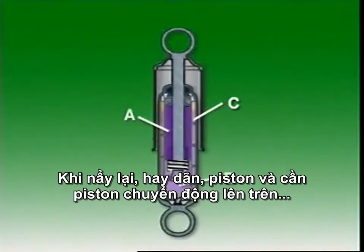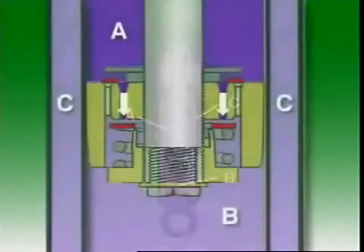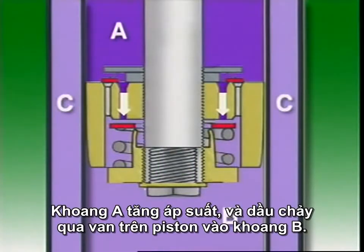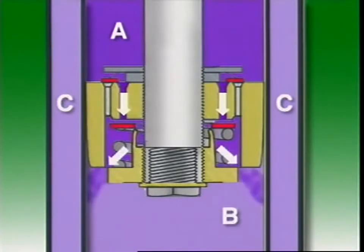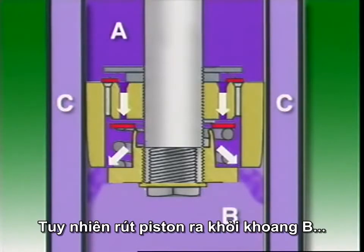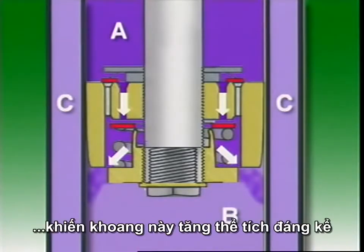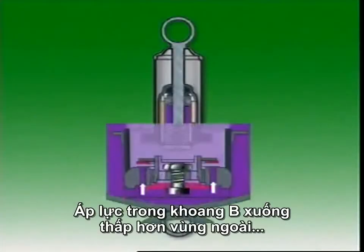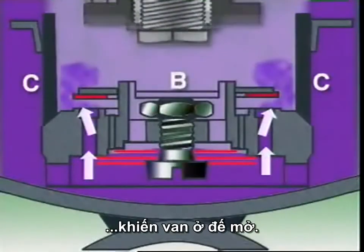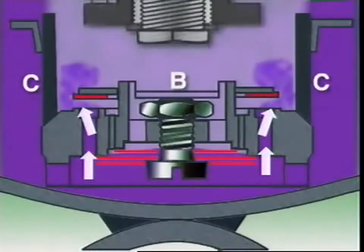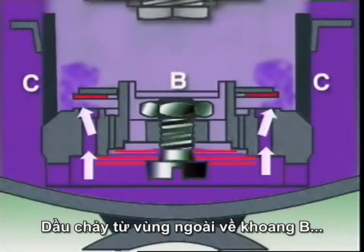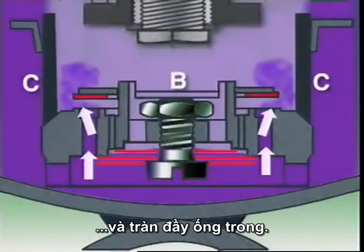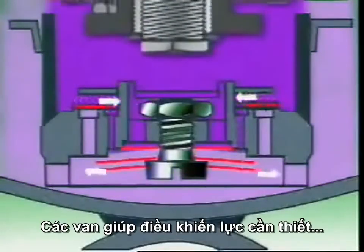In the rebound or extension phase, the piston and rod move upwards and the volume of chamber A is reduced. Chamber A becomes a high pressure area and fluid flows through the extension valve in the piston into chamber B. However, the withdrawal of the piston from B greatly increases its volume and fluid flow from A is insufficient to fill the space. Pressure in B falls below that of the reservoir, causing the base intake valve to be unseated.